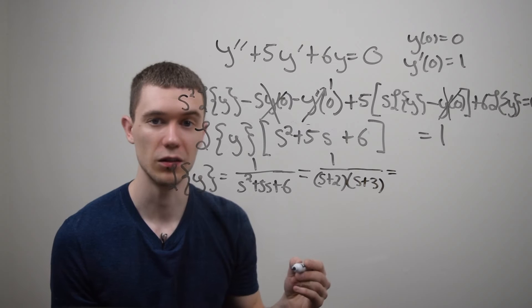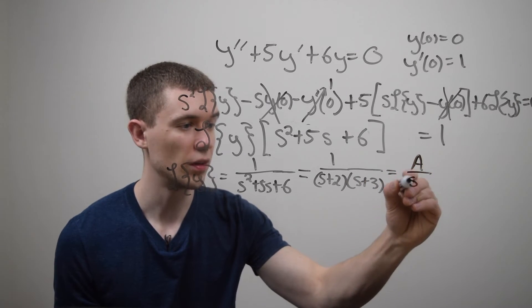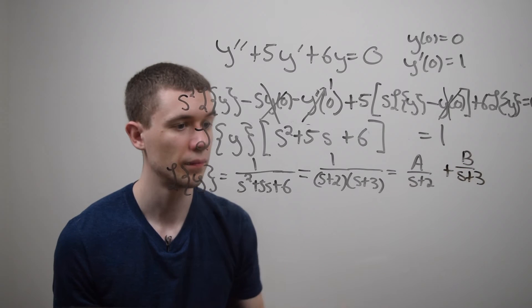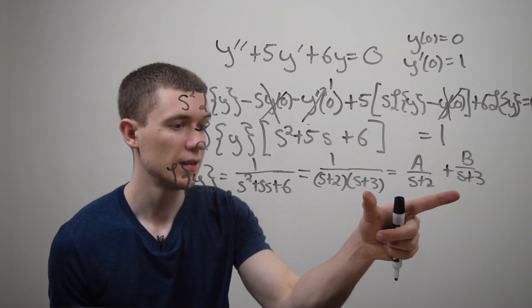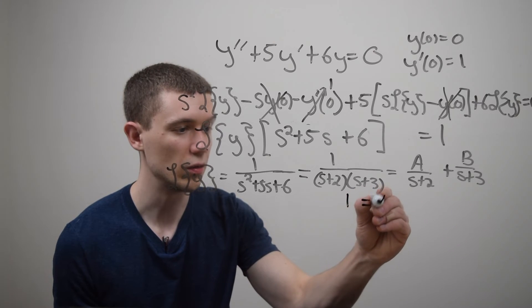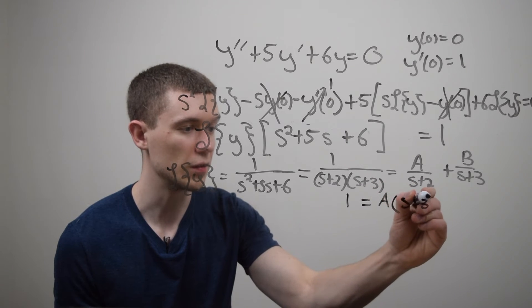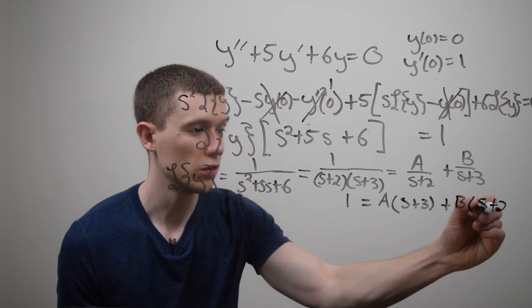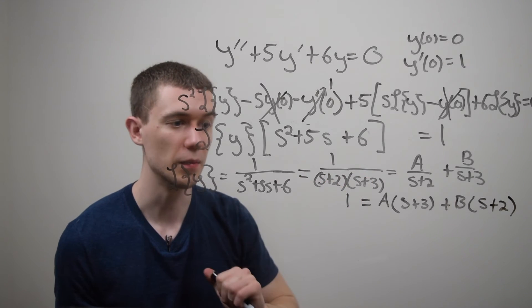And since these are both linear factors, when I split this up into partial fractions, this is going to look like a over s plus two plus b over s plus three. And the way we solve this is I multiply both sides by the entire denominator. And if I do that, that'll give me that one is equal to a times, well, the s plus twos would cancel and I'd be left with a times s plus three. And I'd have b, the s plus threes would cancel and that would be times s plus two. I'm simply getting that by multiplying both sides by the denominator on the left.